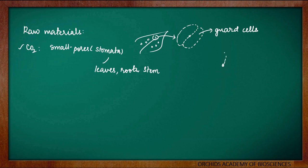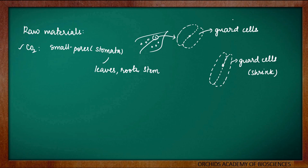How is it done? It is done by the shrinking of the guard cells. When these guard cells shrink, the stomata will completely close. Now, what if the plant again requires carbon dioxide? The guard cells will now swell up. When the guard cells swell up, the stomata will open. So, the opening as well as the closing of stomata are both regulated by the swelling and shrinking of guard cells. That is why we say guard cells regulate the opening and the closing of the small pores present on leaves called as stomata.